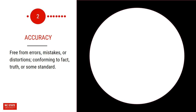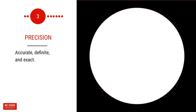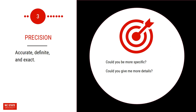Accuracy is defined as free from errors, mistakes, or distortions, conforming to fact, truth, or some standard. Questions here might be: how could we check on that? How could we verify or test that? Precision, which is often confused with accuracy, is defined as accurate, definite, and exact. Questions here are: could you be more specific? Could you give me more details?